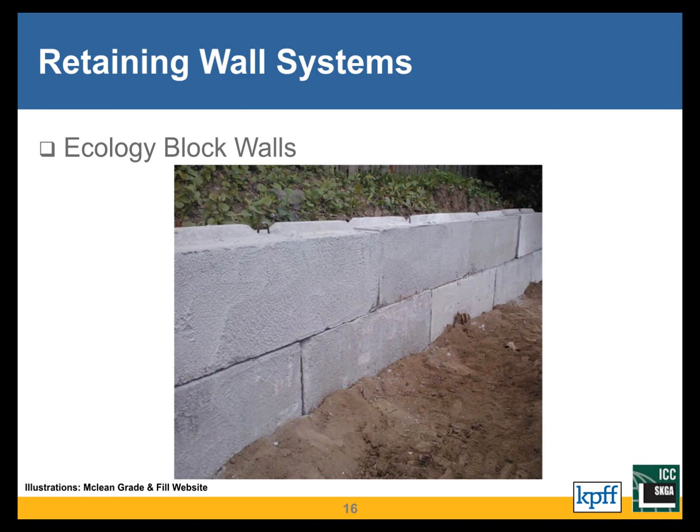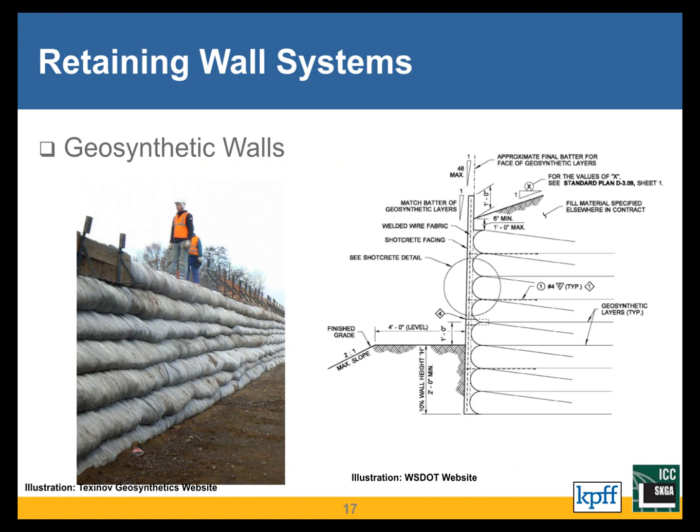Ecology block walls are a low-tech version of a concrete block gravity wall using readily available ecology blocks obtainable from anywhere rather than a proprietary system. Geosynthetic walls are similar to MSE but non-proprietary, using conventional geosynthetic material wrapped in horizontal layers. If temporary, they're left as-is; if permanent, a concrete facing can be applied.